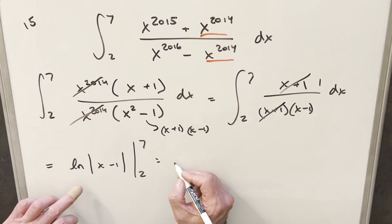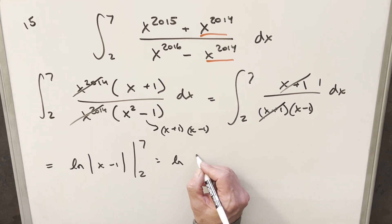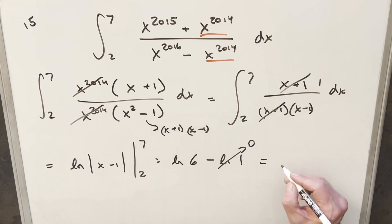Plugging everything in, we get natural log of 6. We can drop the absolute value. Plugging in 2, we get natural log of 1, but natural log of 1 is 0. So for my final solution, we get natural log of 6.